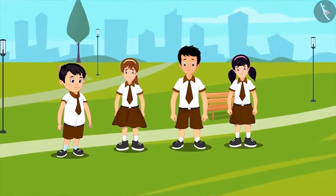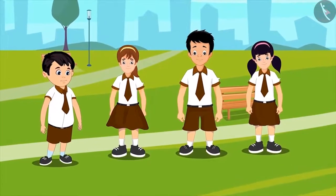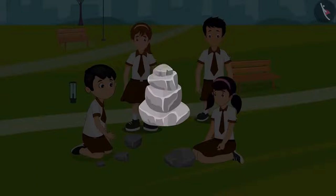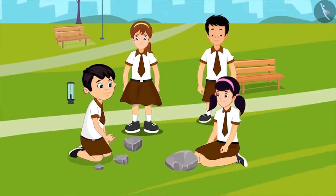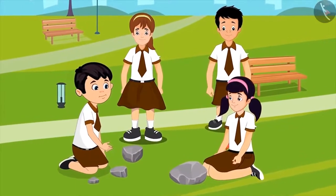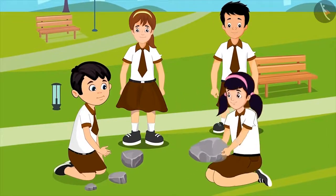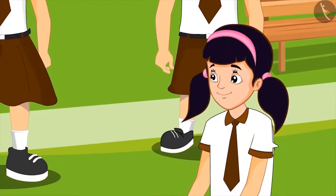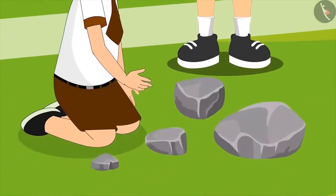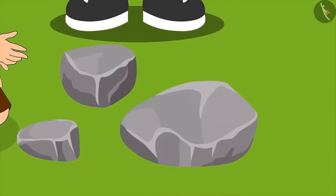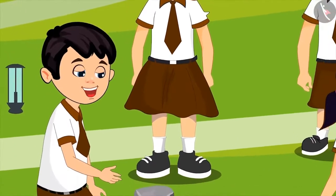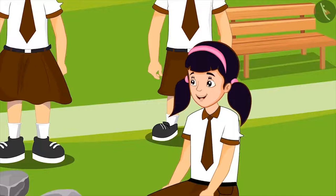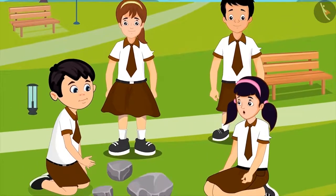The children reached the park for the picnic. There, Chotu and his friends decide to place seven stones. Aarti and Chotu start making a pile of stones based on their size from big to small. Aarti gathers four stones from the surrounding and puts the biggest stone at the bottom. She asks Chotu to help place the rest, telling him to put the largest of the remaining three stones on top. Chotu asks why they are placing the stones in big to small order.